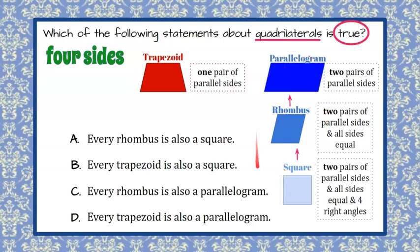None of these three figures are trapezoids because they have two pairs of parallel sides, and a trapezoid only has one. All right, now let's go consider our answer choices.